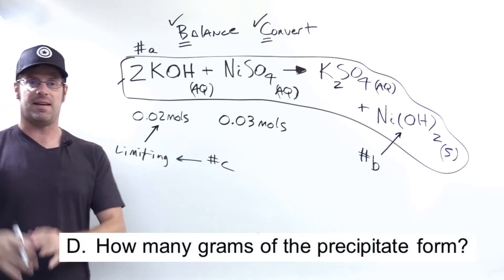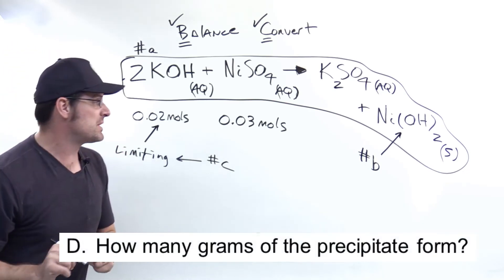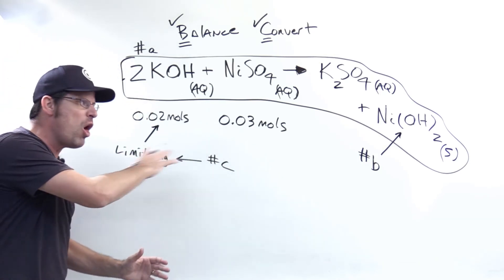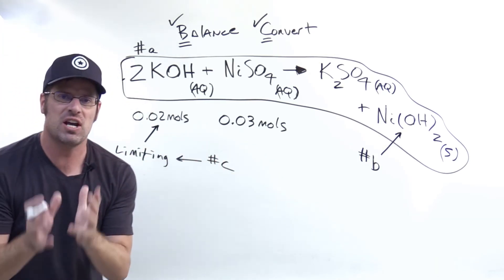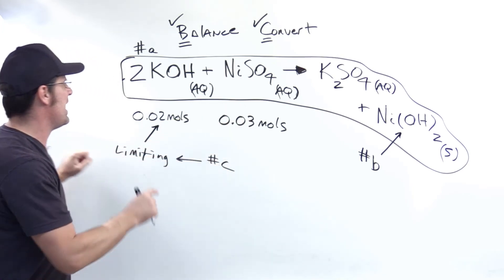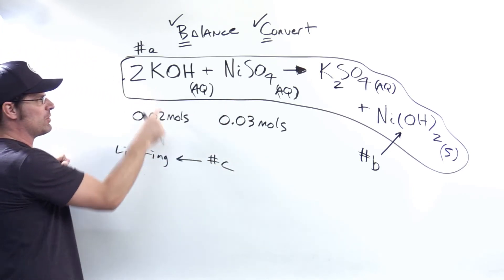That now takes us to part D, determining the number of grams of our precipitate, which is this nickel hydroxide product that form. Now remember that all of the product amounts that form must come from the limiting reactant. So at this point, I don't really care about the nickel sulfate. I have to zoom in like a laser on the limiting reactant, KOH.